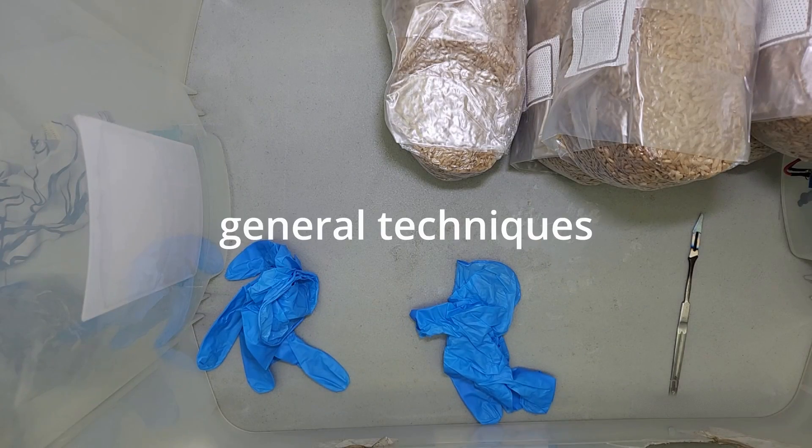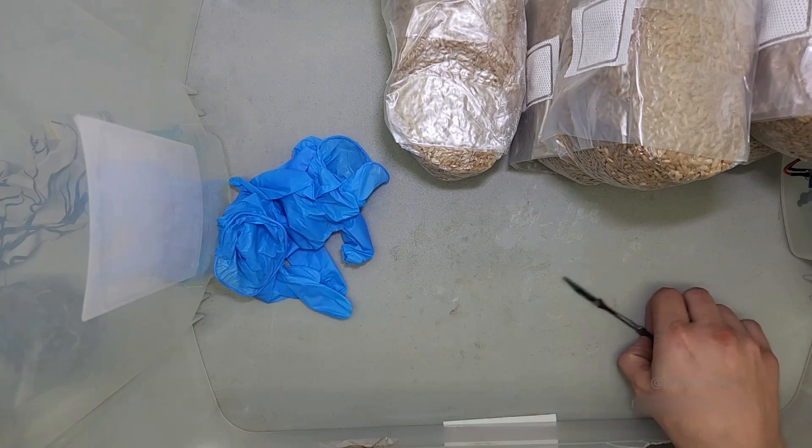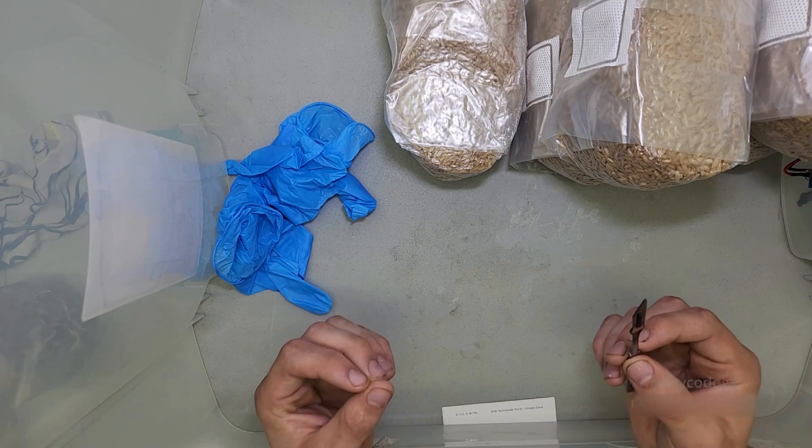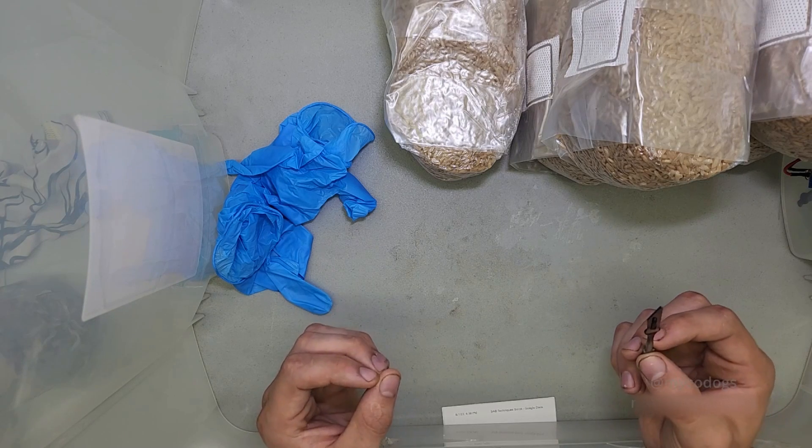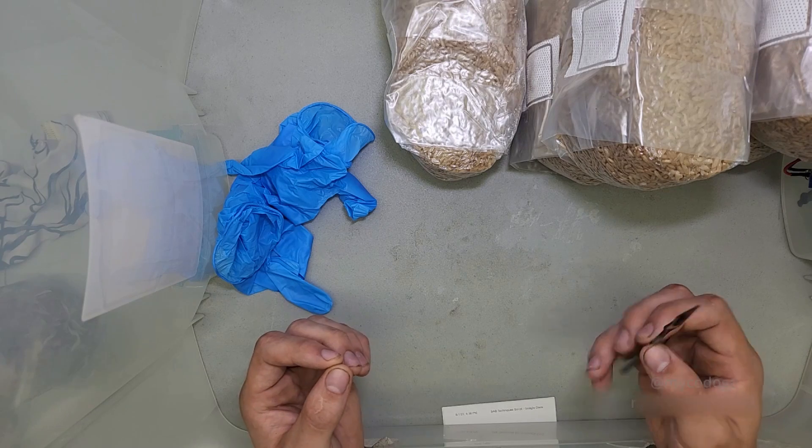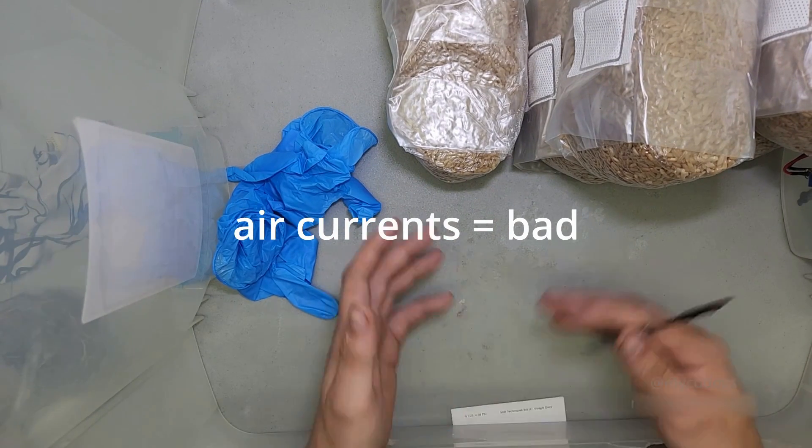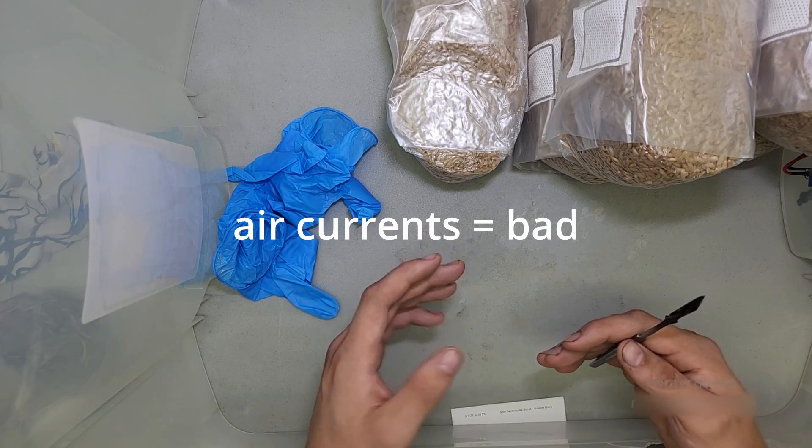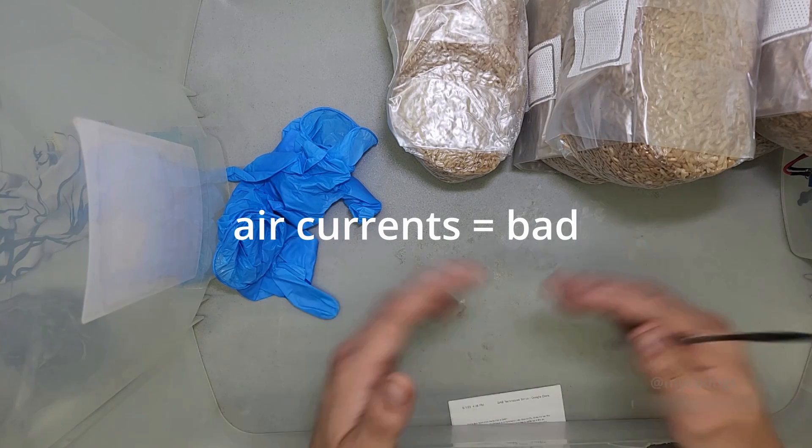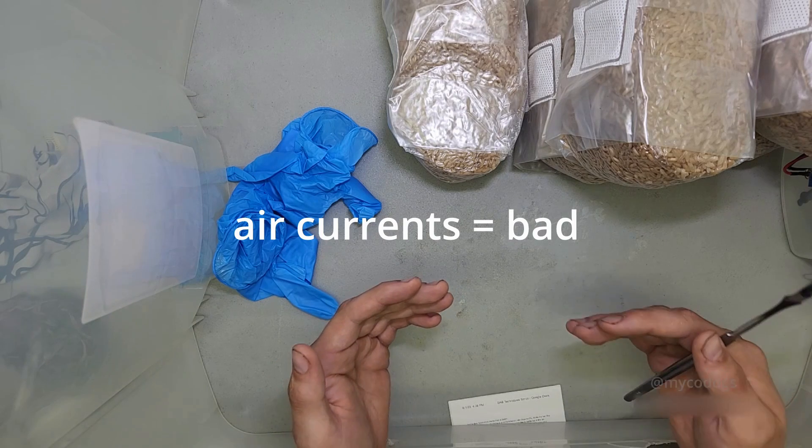All right guys I just want to talk to you about some general techniques when using a still air box now. Imagine I'm working within this still air box. There are a few different things that I like to stay conscious of to make sure that my work stays sterile. So the first and arguably the most important thing to be aware of is don't be waving your hand all around in there. Don't be coughing inside of the holes. If you're smoking when you're doing this turn your head away at least. You don't want to be creating air currents inside of your still air box because that will defeat the purpose of the still air box.